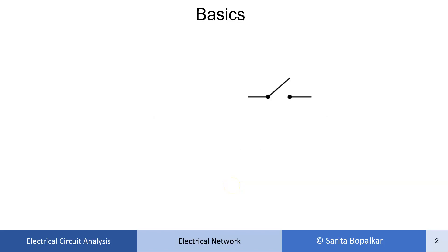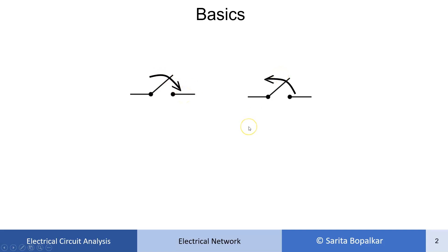In transient analysis, switching is the most important term, that's why we should understand what a switch is. This arrow indicates switch is closed and this arrow indicates switch is open. In transient analysis, this switching action takes place at t is equal to 0.